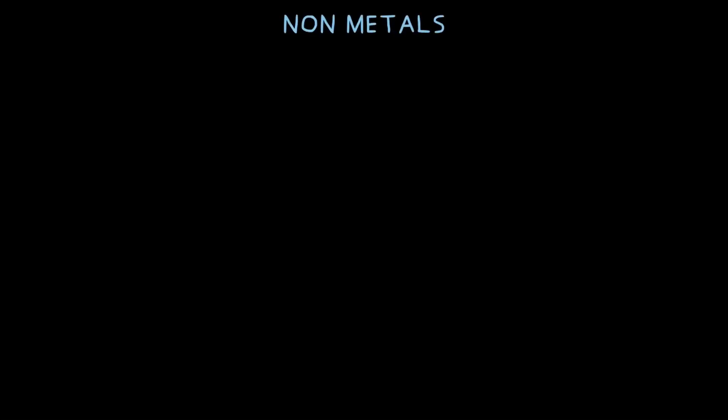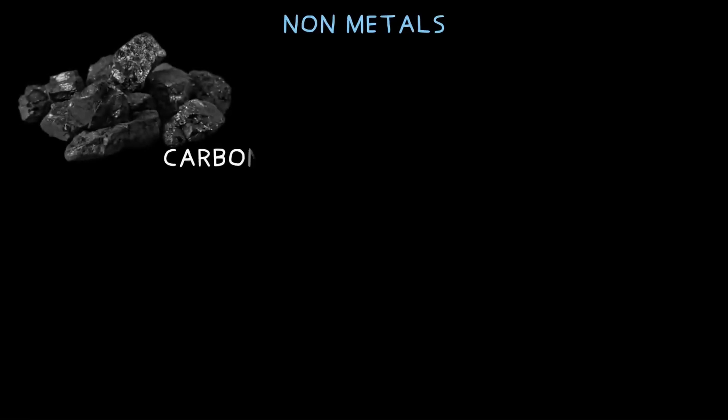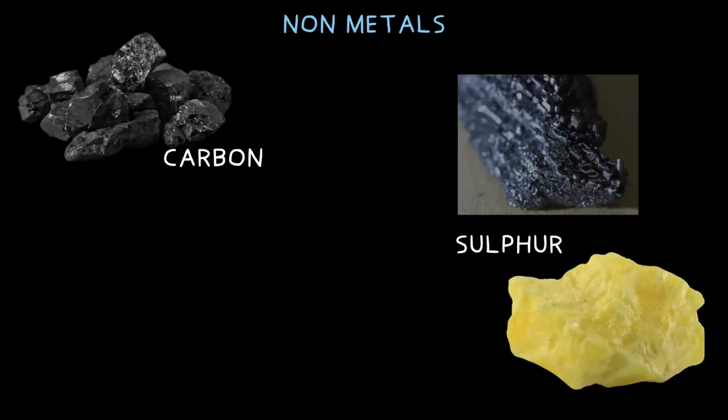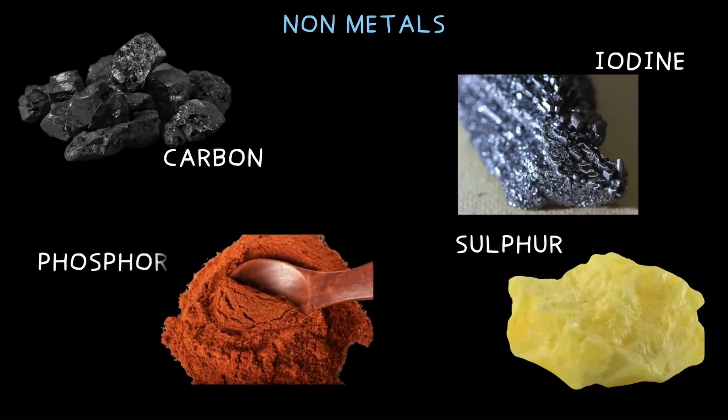In our last video we talked about metals, explored their properties like how shiny they are, whether they are good conductors of heat and electricity. Today we are switching things up and focusing on non-metals. We have got some of them here — carbon, sulfur (the yellow stuff), iodine, and phosphorus. Phosphorus is in powder format right now but it actually comes in little red crumbs, kind of like sulfur but red in color.